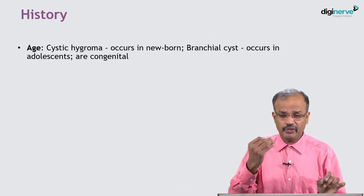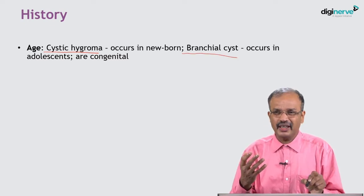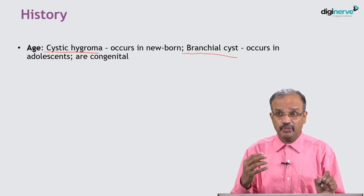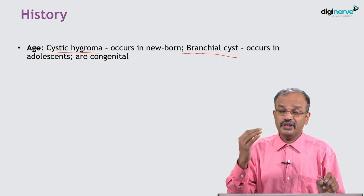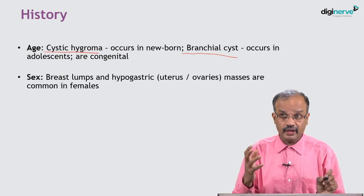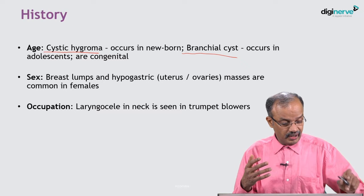When a patient presents with a history of swelling anywhere in the body, several demographic details are important. Age is very relevant — many diseases occur in specific age groups; for example, cystic hygroma occurs in newborns. Sex is important though often understood: breast lumps commonly occur in females, as do uterine and ovarian masses. Occupation is very important — for example, laryngocele in the neck can occur in those who blow trumpets or flutes repeatedly as professionals.